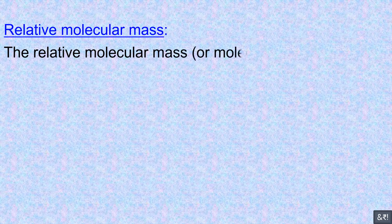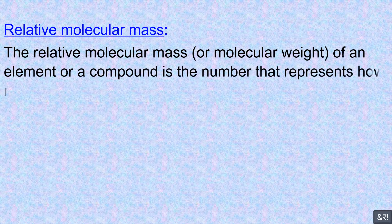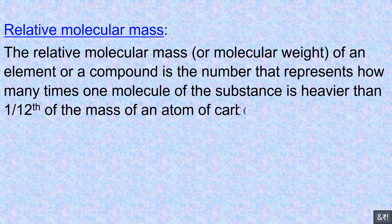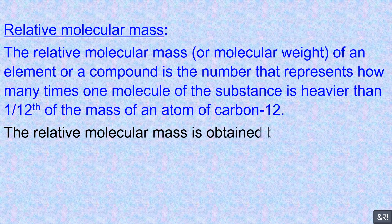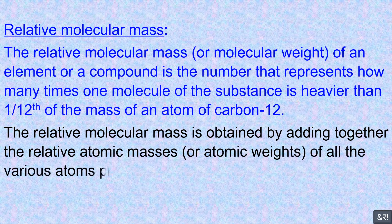Relative molecular mass: the relative molecular mass, or molecular weight, of an element or a compound is the number that represents how many times one molecule of the substance is heavier than one twelfth of the mass of an atom of carbon-12. The relative molecular mass is obtained by adding together the relative atomic masses, or atomic weights, of all the various atoms present in a molecule.